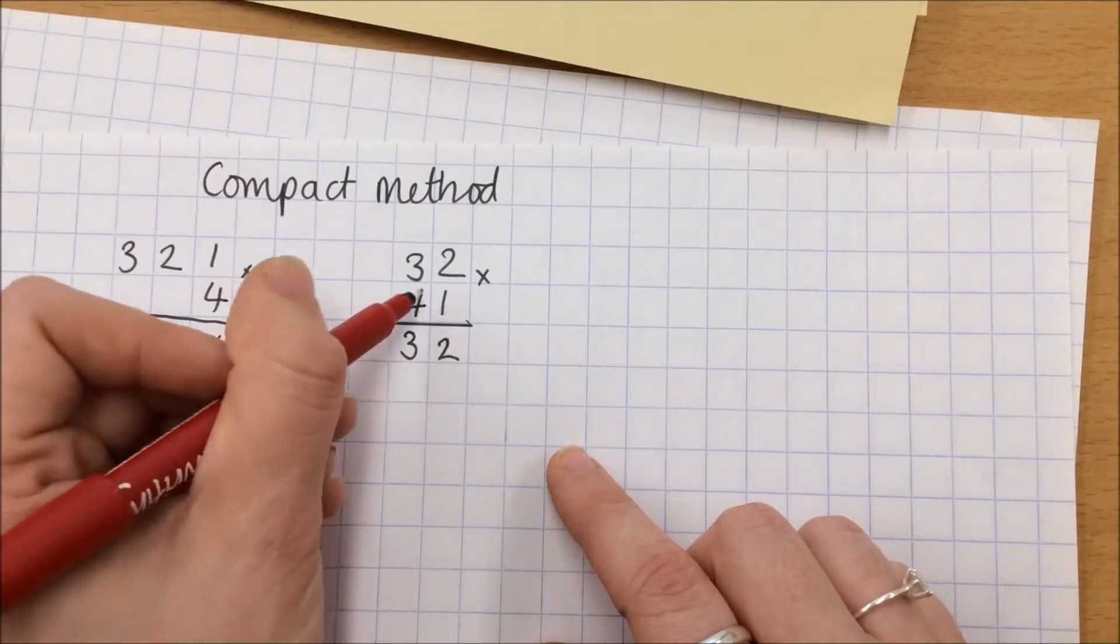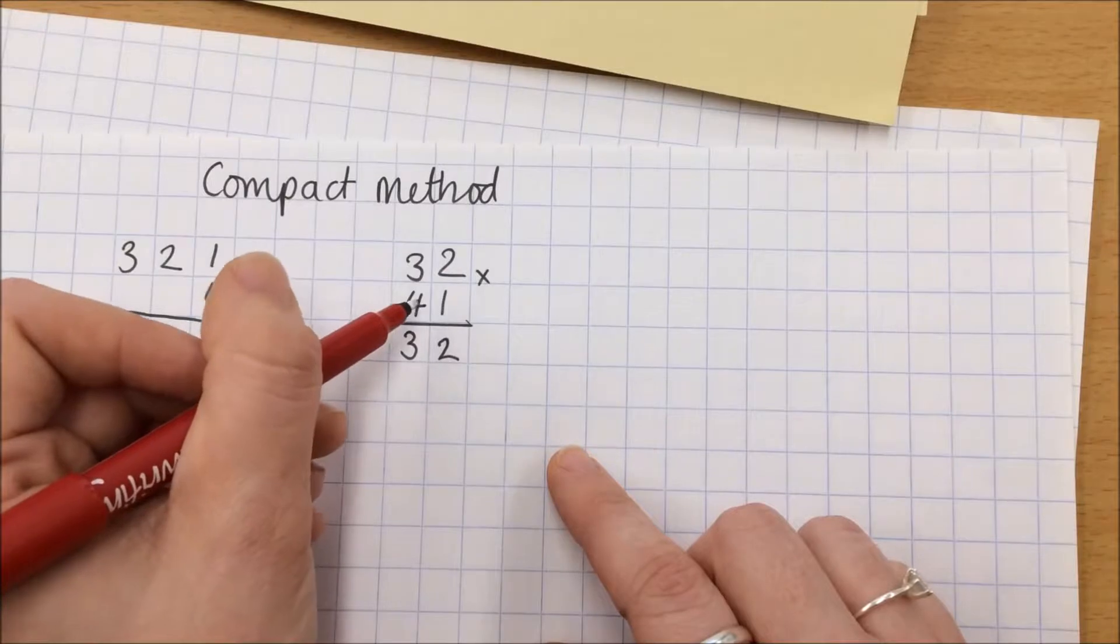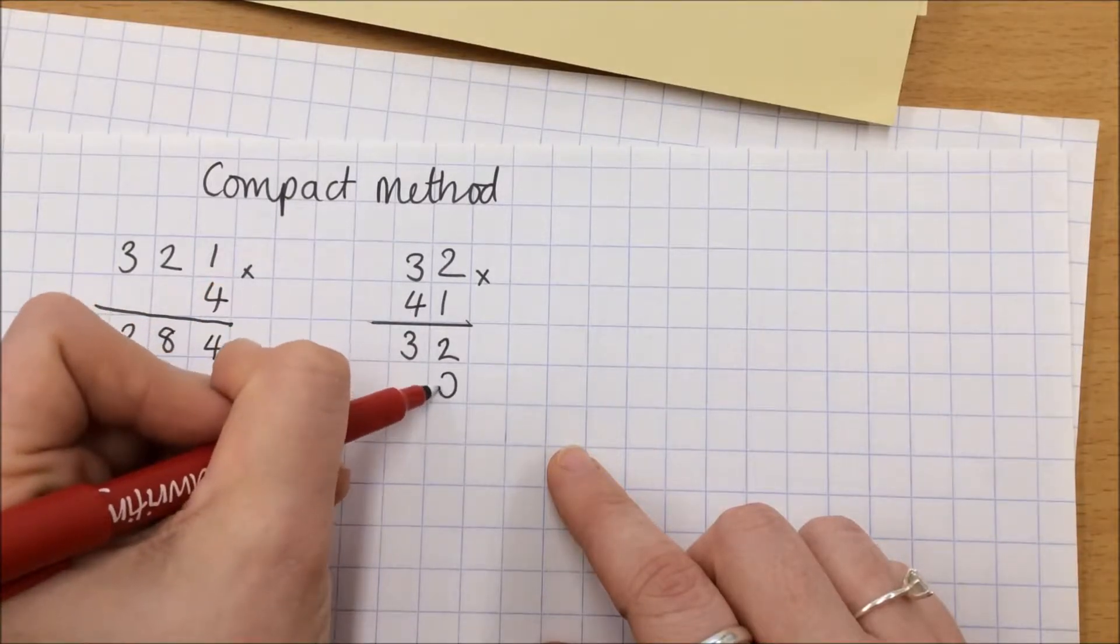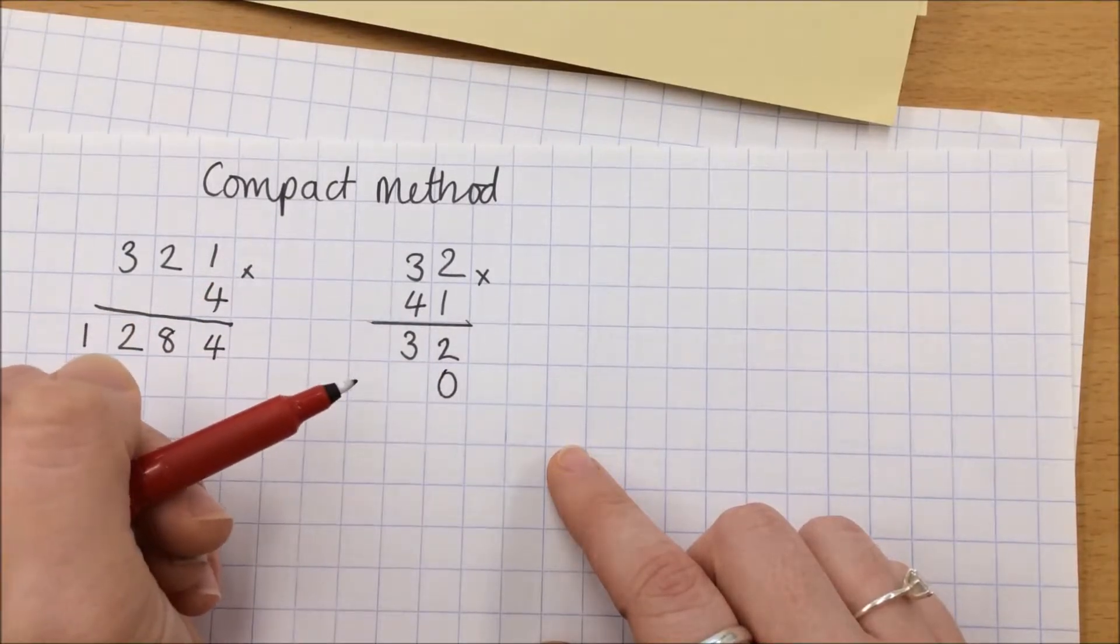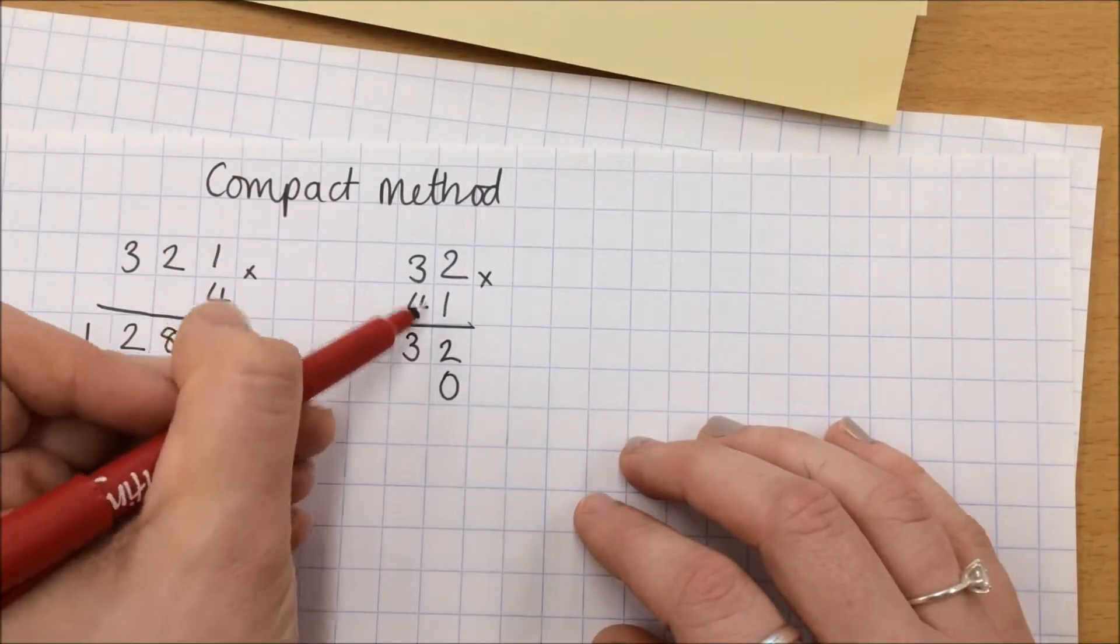Now because I'm multiplying by 40 and not 4, I'm going to instantly put in my place value holder which tells me that I'm multiplying by a multiple of 10.